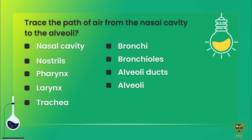Next short question: trace the path of air from nasal cavity to alveoli. Start from the nasal cavity, then bronchioles, then alveolar ducts, and at the end alveoli. That is the path of air from nasal cavity to the alveoli.